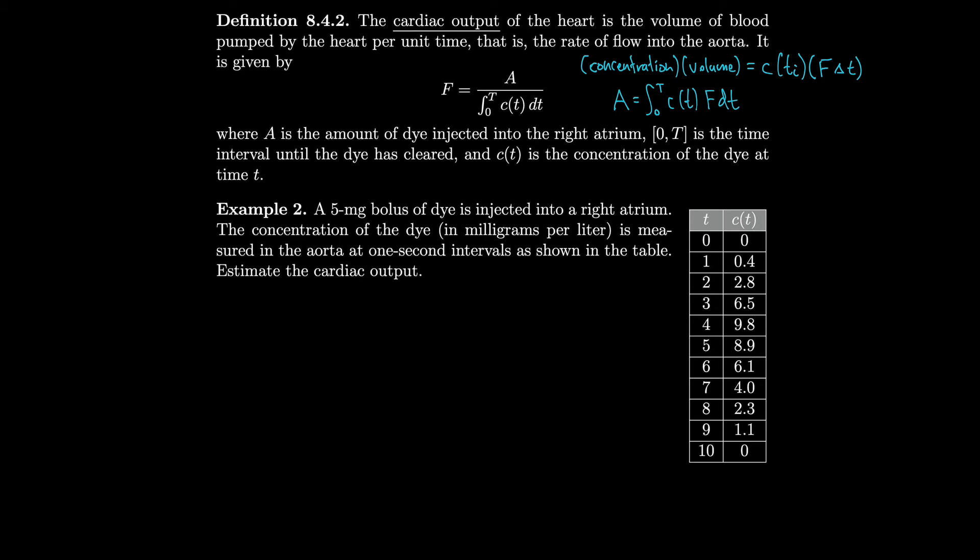Let's do an example of this. A five milligram bolus of dye is injected into a right atrium. The concentration of the dye in milligrams per liter is measured in the aorta at one second intervals as shown in the table. Let's estimate the cardiac output. In this case, we have that A equals 5, we have delta t is equal to 1, and we have capital T is equal to 10. So we want to know what the integral from zero to capital T, zero to 10, is equal to.